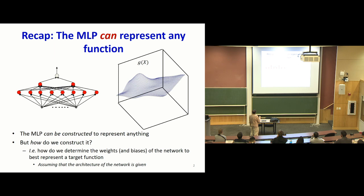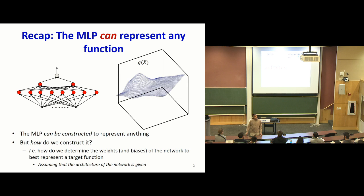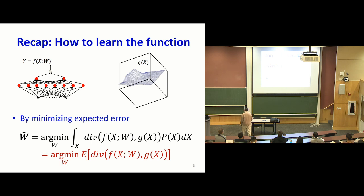So what we've seen so far — a couple of classes ago — a multi-layer perceptron can be constructed to represent pretty much any function. But just because you can represent it doesn't mean any network is going to represent any function. You've got to figure out how to construct it. And so we saw that if you wanted to represent a specific function of a certain number of variables.